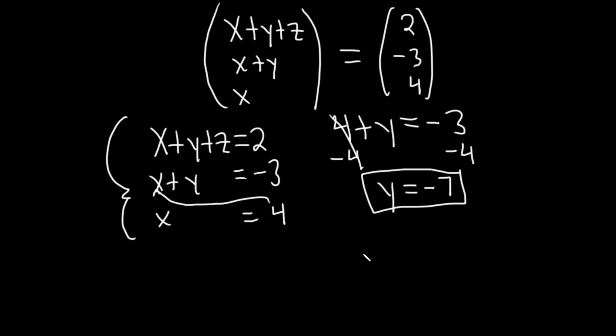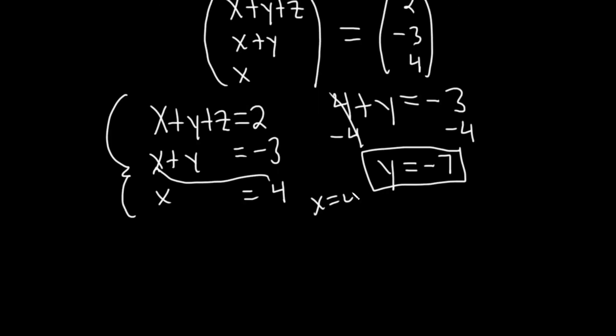And now that we have y, and we also have x, which is 4, we can plug them both into the first equation. So 4 plus y, so minus 7, plus z equals 2.